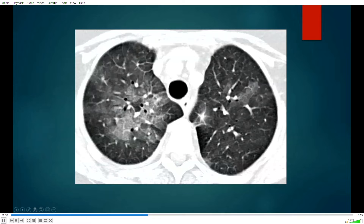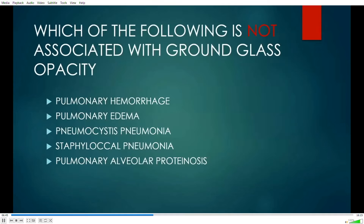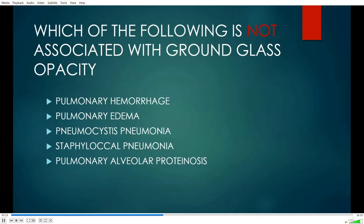Ground glass opacity is amorphous looking and usually has poorly defined borders. You can also have ground glass nodules with a typical spherical shape, but often their margins are not very well defined. Now, which of the following is NOT associated with ground glass opacity? A) pulmonary hemorrhage, B) pulmonary edema, C) pneumocystis pneumonia, D) staphylococcal pneumonia, or E) pulmonary alveolar proteinosis? Remember — it's which one is NOT associated with ground glass opacity.